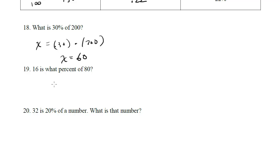How about 19? 16 is what percent of 80? Let's do this again. 16 is what percent, so we're looking for a percent here, of 80 times 80. We're going to get n is 16 over 80, which is 1 fifth, which is 0.2. We turn that from a decimal to a percent, we get 20% as our answer.